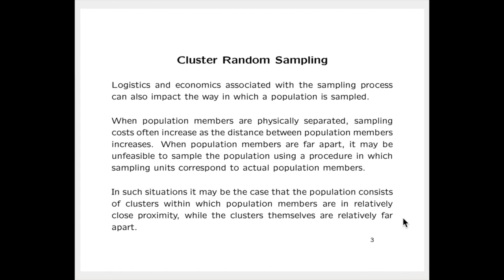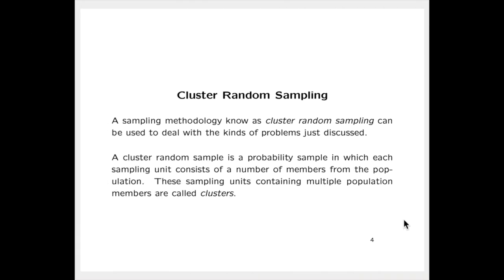Logistics and economics associated with the sampling process can also impact the way in which a population is sampled. For example, when population members are physically separated, sampling costs often increase as the distance between population members increases. When population members are far apart, it may be unfeasible to sample the population using a procedure in which sampling units correspond to actual population members. In such situations, the population may consist of clusters within which population members are in relatively close proximity, while the clusters themselves are relatively far apart. A sampling methodology known as cluster random sampling can be used to deal with these kinds of problems.